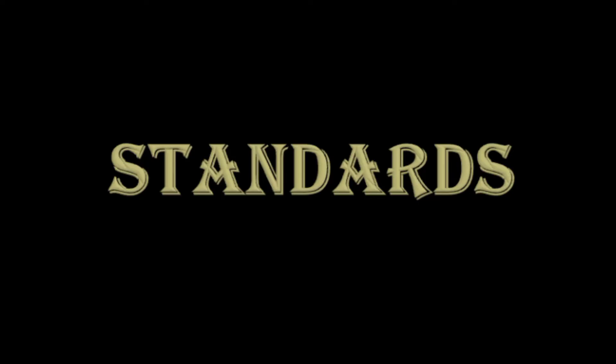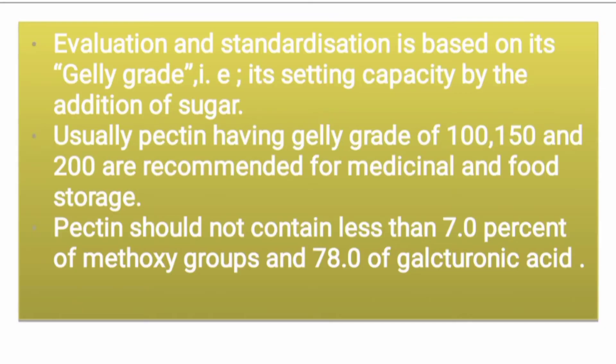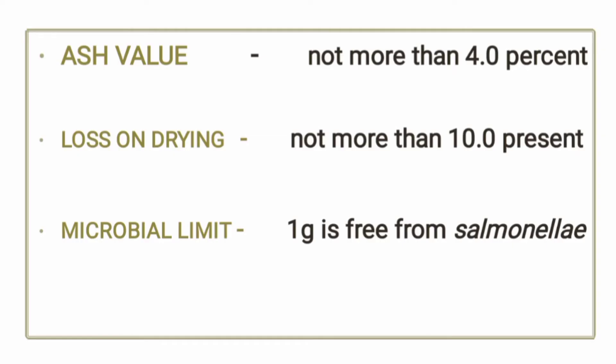Pectin has a jelly grade standard. To assess its gelling capacity, grades of 100, 150, and 200 are used. It is highly recommended for both medicinal and food purposes. Standard pectin should contain not less than 7% methoxy groups and 78% galacturonic acid. Additional parameters include ash content, loss on drying, and microbial limits.